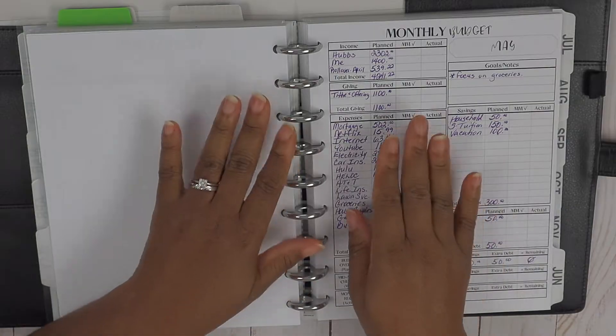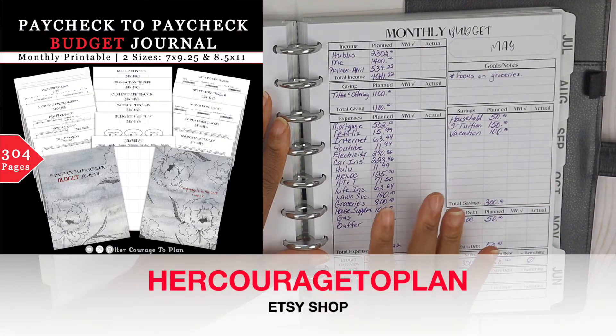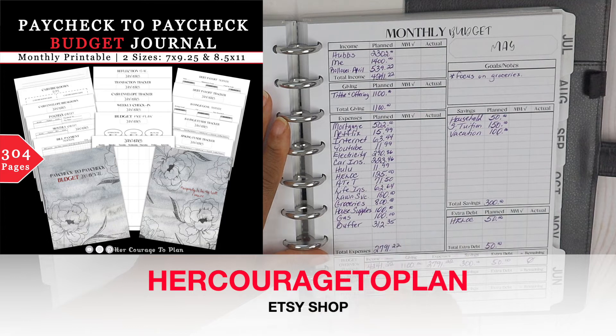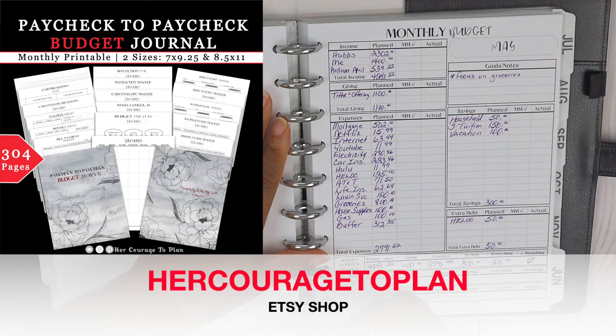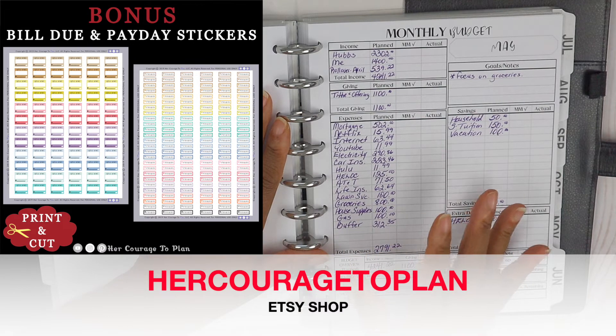Now if you are liking this monthly budget sheet, I do have my new paycheck to paycheck budget journal. It is a 12-month budget journal, guys. You get your bill due stickers and you get payday stickers as a bonus.